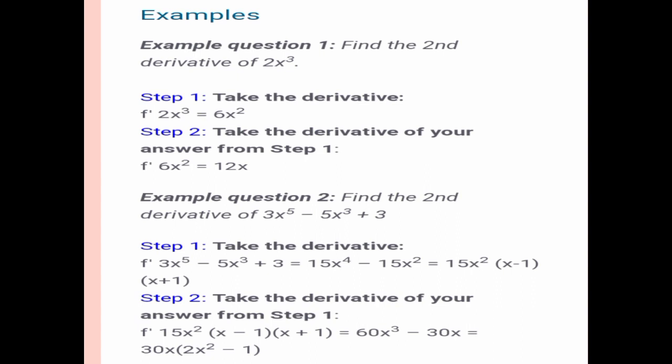Because 6 times 2, or the exponent of x, is 12. That's why the second derivative is 12x.